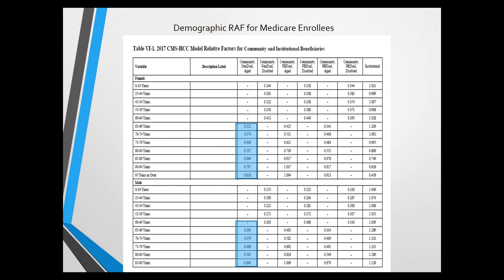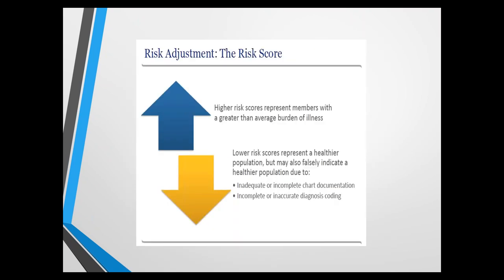Here you can see the demographic RAF for Medicare enrollees. For ages 65–69, a female gets a 0.312 RAF score and a male gets 0.30. This increases as you get older as the health burden gets worse. Higher risk scores represent members with a greater than average burden of illness, but lower risk scores could indicate a healthier population or could be a result of inadequate or incomplete chart documentation, or inadequate diagnosis coding — which is critical to determining the risk score.